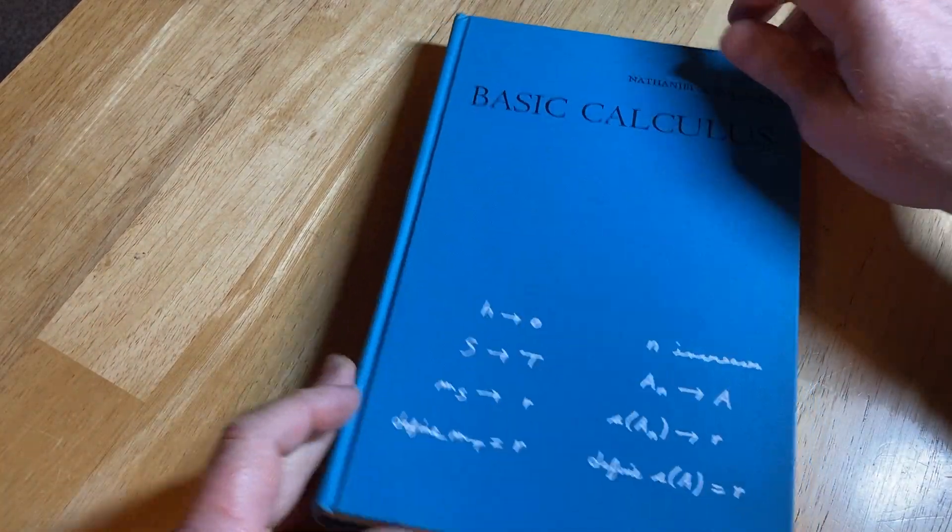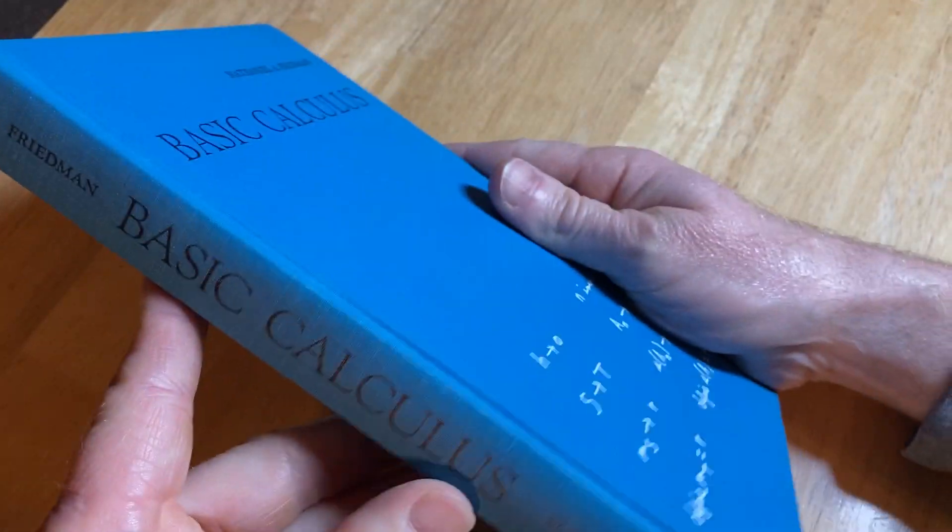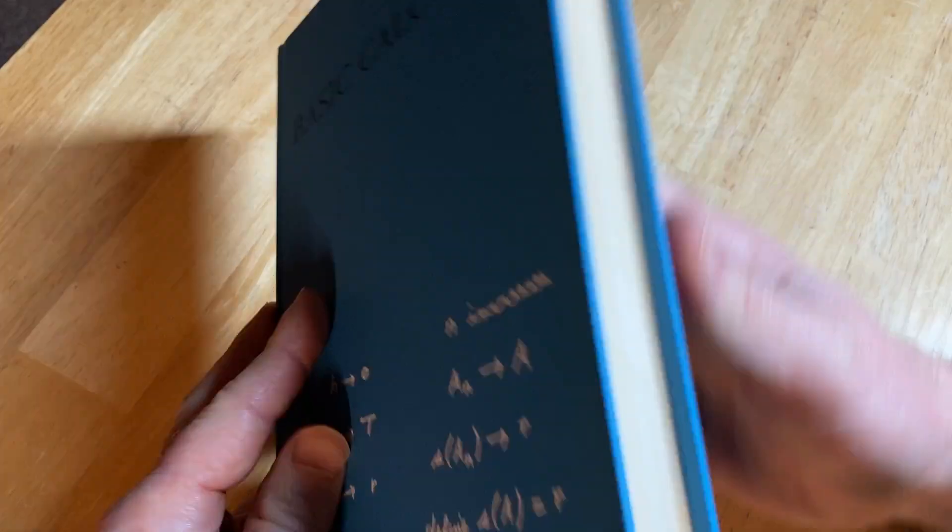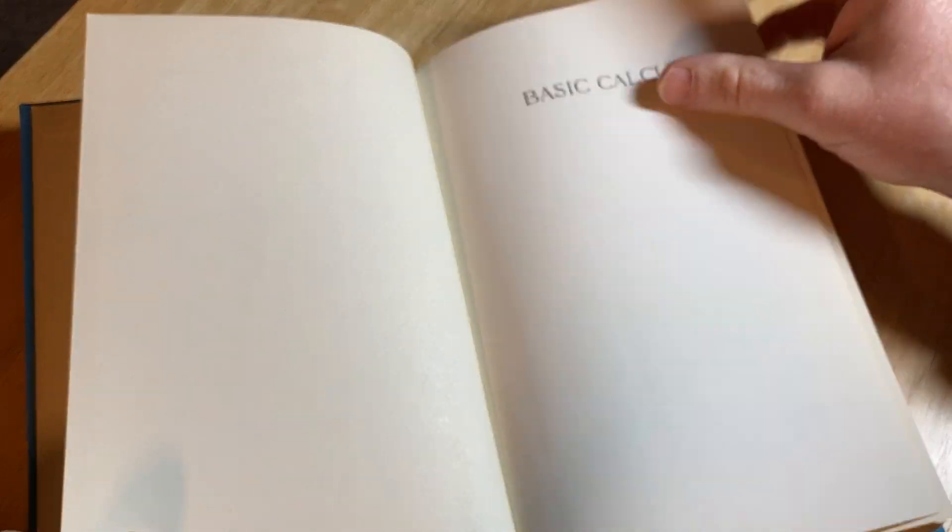Here we have a book called Basic Calculus. It was written by Nathaniel Friedman, and this is a book. I've actually read portions of this book and worked through some of the examples. Basic Calculus.